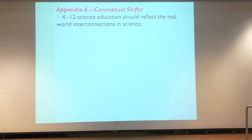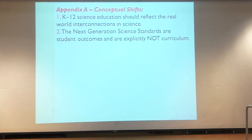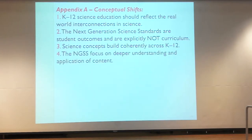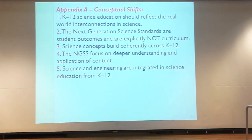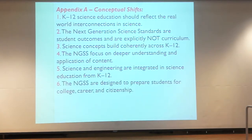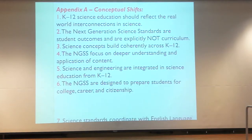The seven conceptual shifts are: one, K-12 science education should reflect the real-world interconnections in science; two, the NGSS are student outcomes and explicitly not curriculum; three, science concepts build coherently across K-12; four, the NGSS focus on deeper understanding and application of content; five, science and engineering are integrated in science education from K-12; six, the NGSS are designed to prepare students for college, career, and citizenship; and seven, science standards coordinate with the English Language Arts and Mathematics Common Core State Standards.